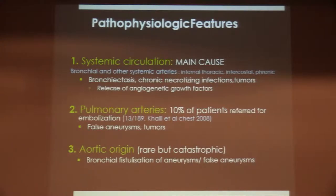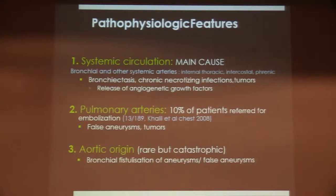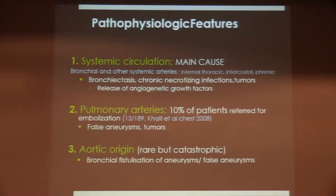More rarely, the bleeding is due to the pulmonary arteries — representing 10% of patients referred for embolization in one series from my colleague Antoine Khalil from Bichat Hospital in Paris. This occurs in patients with false aneurysms of infectious origin, and in patients with tumors, where central lung cancer may invade the vessels and cause haemoptysis of pulmonary artery origin.